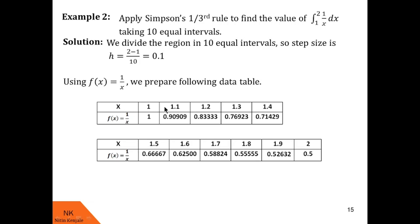Here f(x) = 1/x, so using this we prepare a data table. x₀ = 1, adding h gives x₁ = 1.1, then x₂ = 1.2, x₃ = 1.3, x₄ = 1.4, x₅ = 1.5, and so on up to 2. Substituting these x values into f(x) = 1/x gives the corresponding f(x) values.